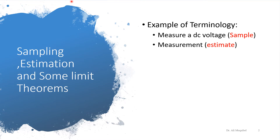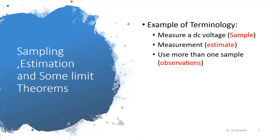The measurement is an estimate of the true value. When we do measurements, we're trying to estimate the true value. When we do lots of observations — lots of measurements, multiple samples — we are doing observations. Using a large number of sources will result in the process of averaging. To get the average, we need to have lots of observations and we can average things out.